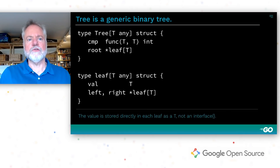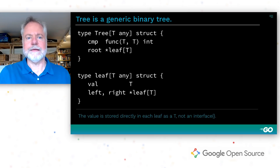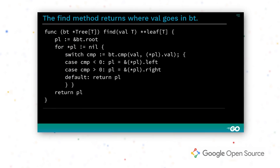Here's what a binary tree data structure might look like using type parameters. Each leaf node in the tree contains a value of the type parameter t. When the tree is instantiated with a particular type argument, values of that type will be stored directly in the leaf nodes — not stored as interface types. This is a reasonable use of type parameters because the tree data structure and the code in its methods are largely independent of the element type t. The data structure needs to know how to compare values of type t and uses a passed-in comparison function, seen in the call to bt.comp.